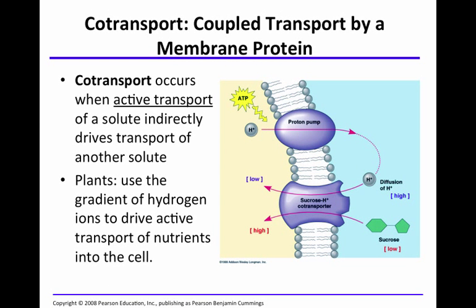There is another mechanism of active transport called co-transport. Co-transport is coupled transport that occurs via membrane proteins. Co-transport occurs when active transport of one solute indirectly drives transport of another solute. An example is plants, which use the gradient of hydrogen ions to drive active transport of nutrients into the cell.